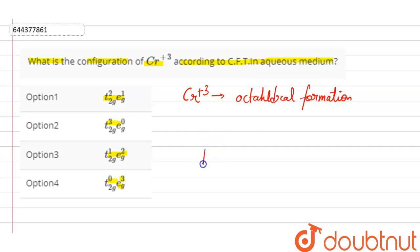And in case of octahedral formation, the splitting will be like this. According to crystal field theory, the lower orbital is called as T2G and the higher orbital is called as EG.